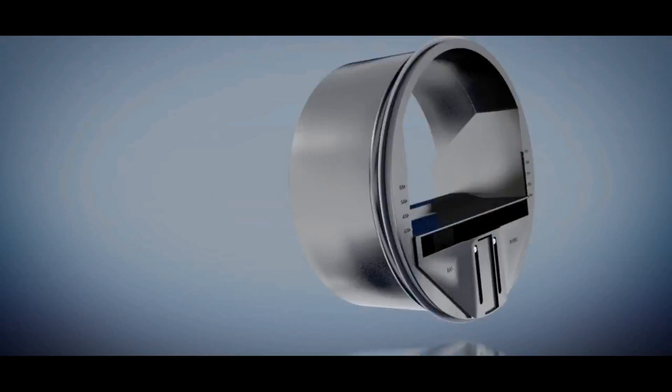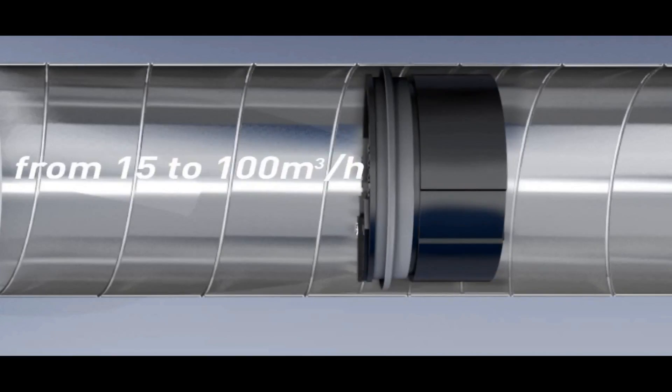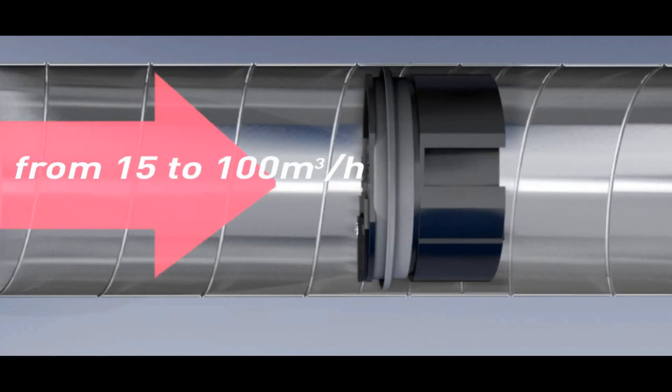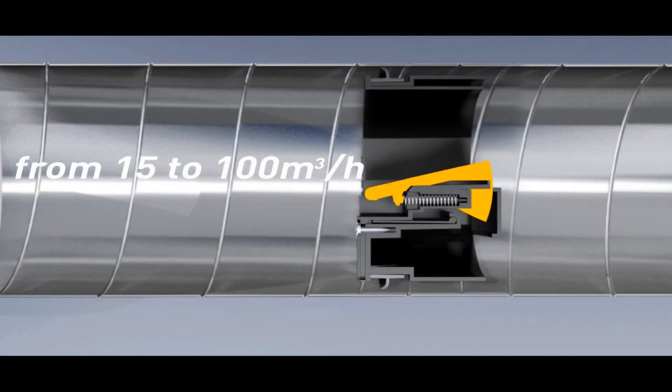For flow rates from 15 to 100 cubic meter per hour, the control flap is in the same direction of the air flow. As pressure increases, the rear of the flap lifts more or less to reduce the air flow.